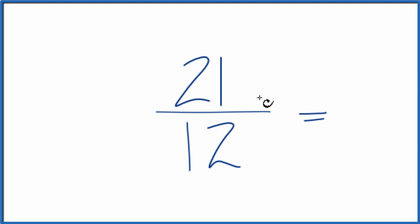So to do that, we need to find a common factor, something that goes into 21 and 12 evenly.